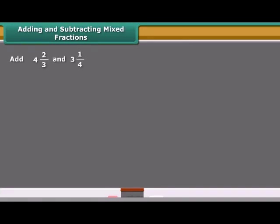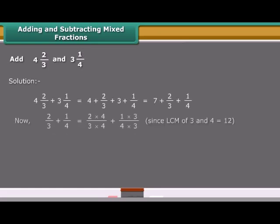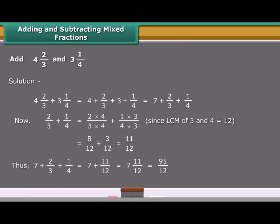Mixed fractions can be written either as a whole part plus a proper fraction or entirely as an improper fraction. One way to add or subtract mixed fractions is to operate separately on the whole parts and fractional parts. The other way is to write the mixed fractions as improper fractions and then directly add or subtract them.